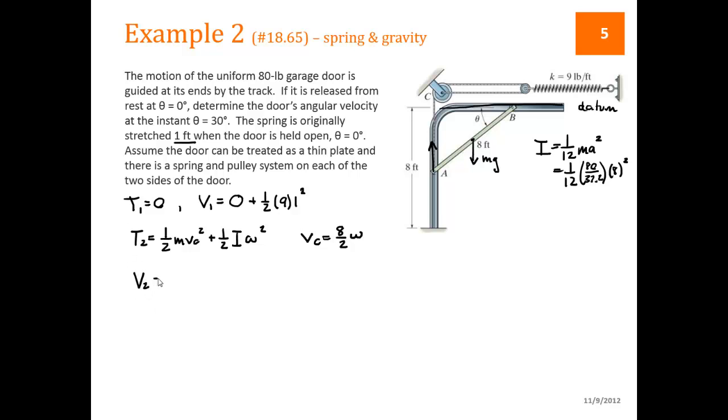Our potential energy at that point is going to be the gravitational potential energy, which is below the datum, so it's negative mg h. And our spring potential energy, which is plus 1/2 k s squared. Now we need to relate h and s to the theta that we're given, the 30.